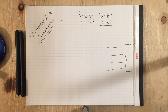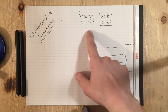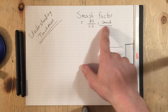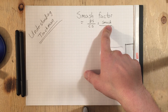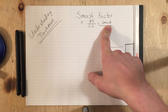There's been a lot of talk recently about clubhead speed, especially someone like Tiger Woods, and how it relates to smash factor, which is ball speed divided by clubhead speed. That gives you your smash factor, which is an efficiency rating on your contact points.